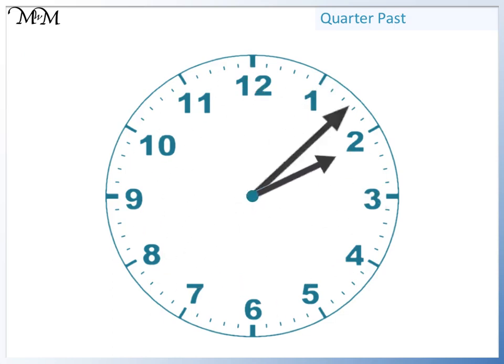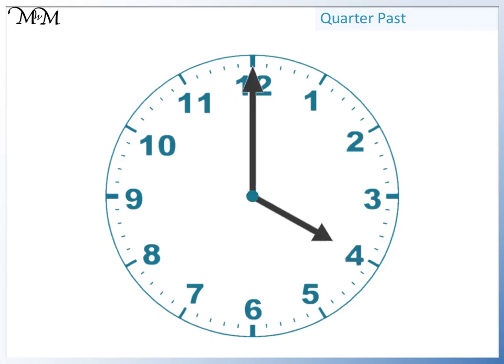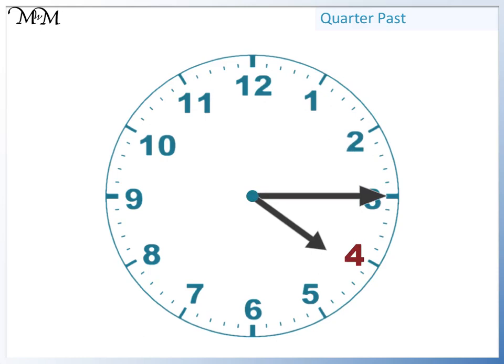This time, we'll start at four o'clock. The minute hand moves one quarter of the way around the clock to three. This means that the time will be quarter past. The hour hand is a quarter of the way past four.